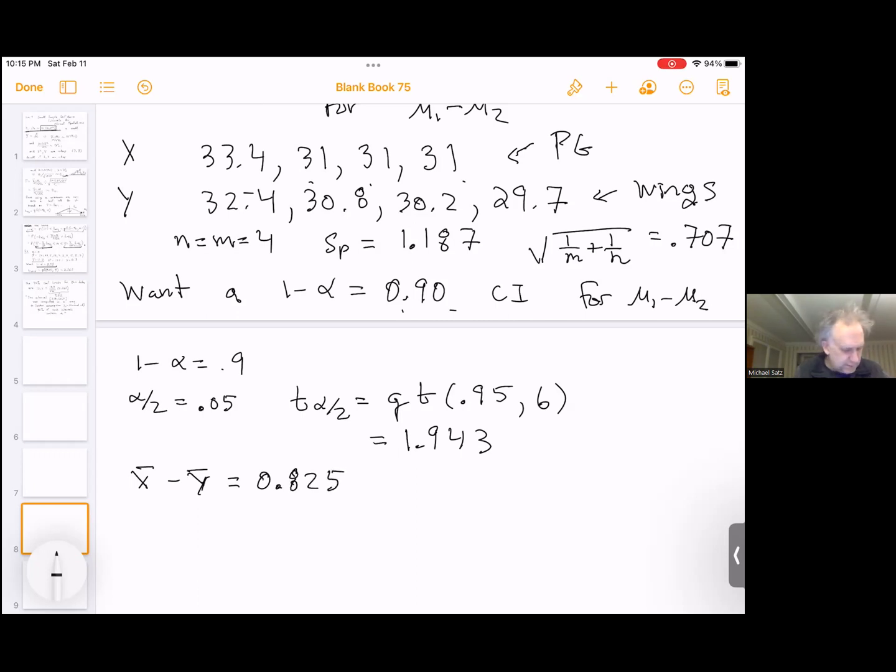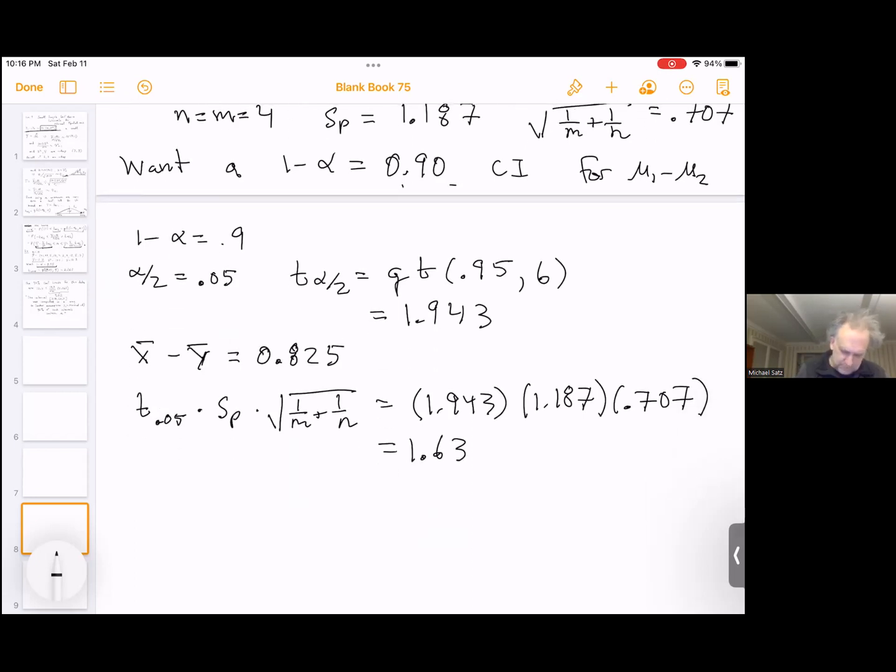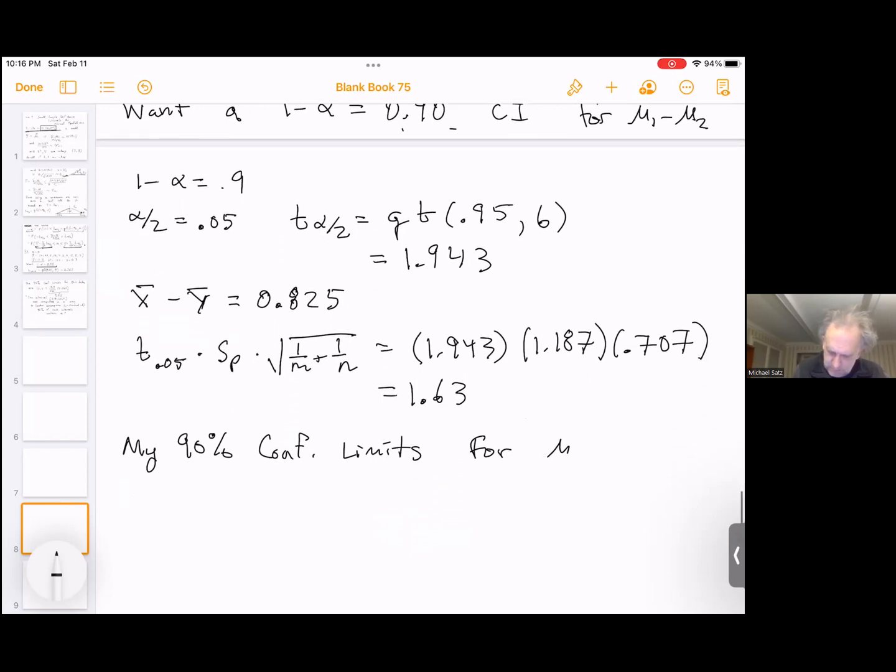And I have my radius is t 0.05 times sp times square root 1 over m plus 1 over n. And this is equal to 1.943 times sp is 1.187 and 0.707. This is not very big, close to 1. I get 1.63. So my 90% confidence limits for the difference in points per game.